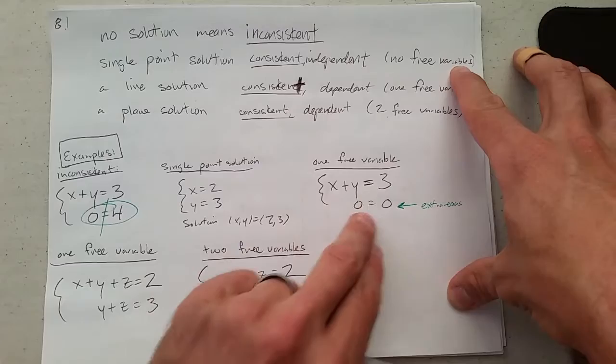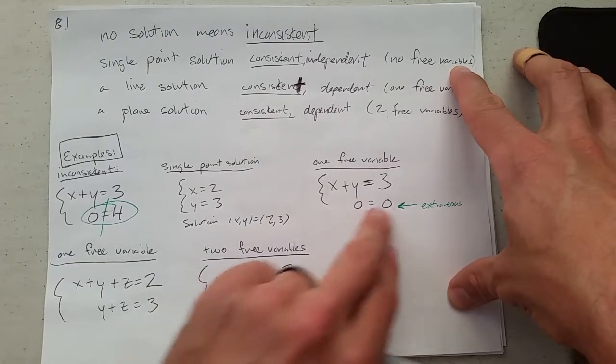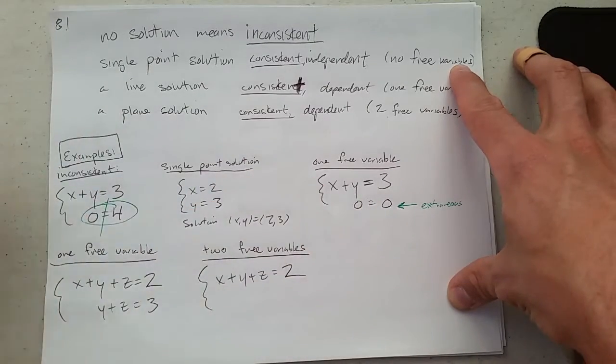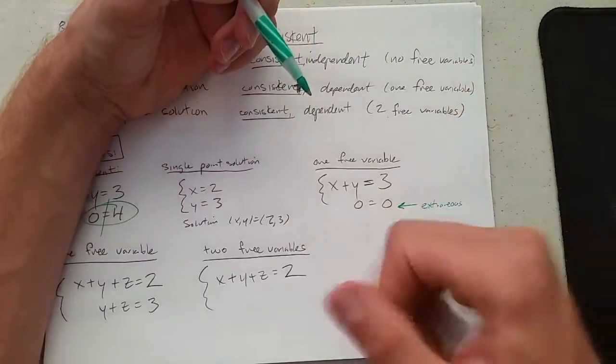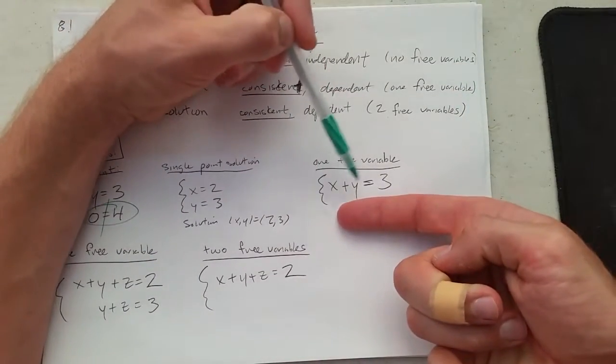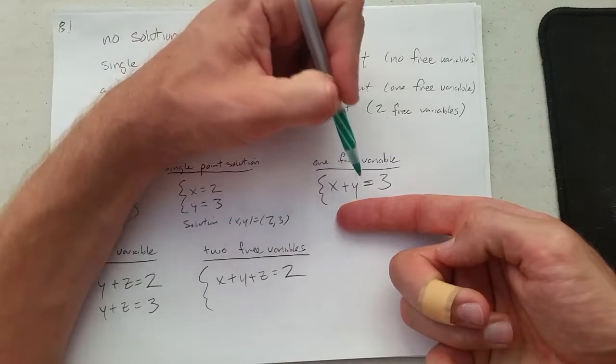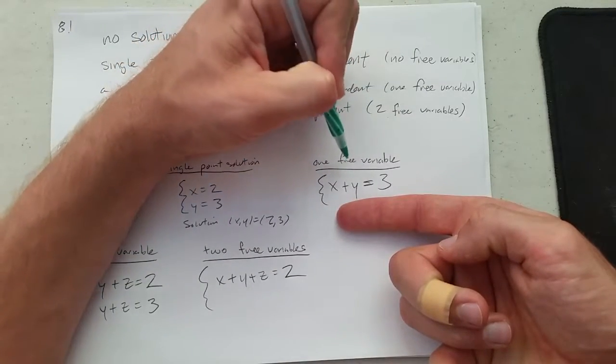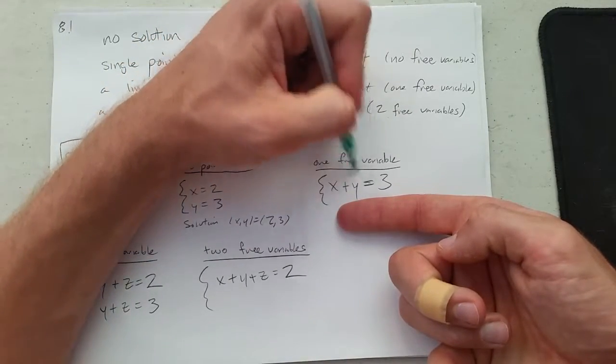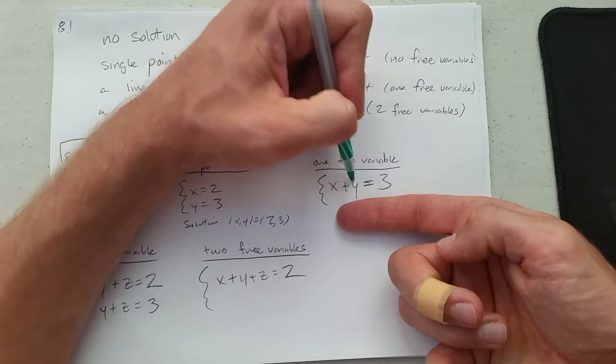Same first equation, X plus Y equals 3, but our second equation, we already knew 0 equals 0, so we don't even need to consider that. X plus Y equals 3 has one free variable. Looks like it has 2, but when we say one free variable, if you pick what Y is, you could pick any number you want for Y.